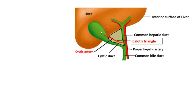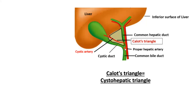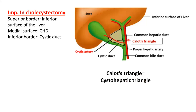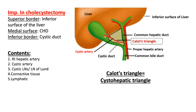The triangle of Calot (cystohepatic triangle) is important to identify before any biliary operation. Its superior border is the inferior surface of the liver, the medial border is the common hepatic duct, and the inferior border is the cystic duct. Its contents are the cystic artery, sometimes the right hepatic artery, and cystic lymph nodes (lymph node of Lund), plus connective tissue and lymphatics.